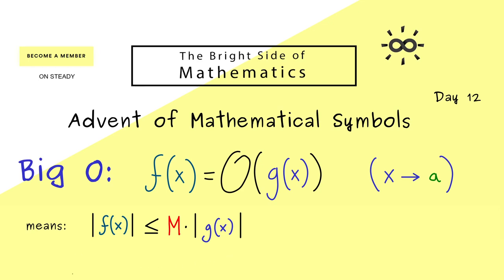Now if you don't like this constant M, we can also rewrite the whole thing with a limit superior. So we have lim sup where x goes to the point a, and then we take the absolute value of f divided by g. And now this lim sup should be a finite number, so we can write less than infinity.